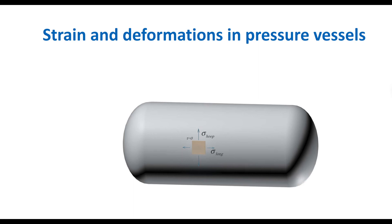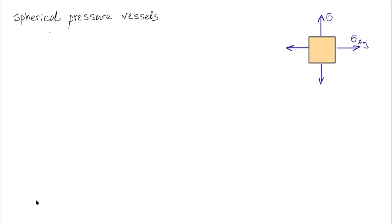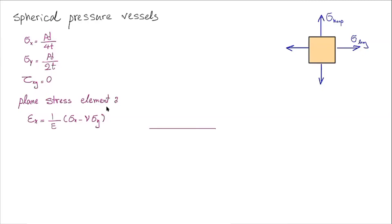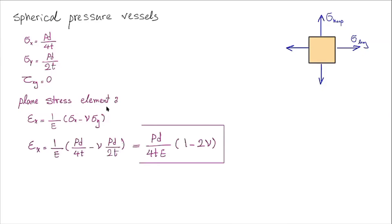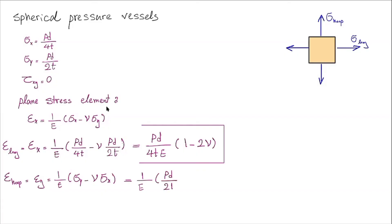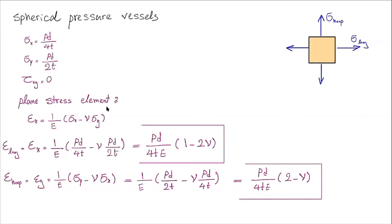We can develop the same strain equations for cylindrical pressure vessels. Assuming that stress in the horizontal direction is longitudinal and in the vertical direction is hoop, sigma_x is Pd divided by 4t and sigma_y is Pd divided by 2t, with no shear stress on that element. Using the same plane stress equations and substituting sigma_x and sigma_y gives us the magnitude of strain in the longitudinal direction. For strain in the hoop direction, sigma_y is Pd divided by 2t and sigma_x is Pd divided by 4t, and the equation simplifies to Pd divided by 4tE multiplied by (2 minus nu).